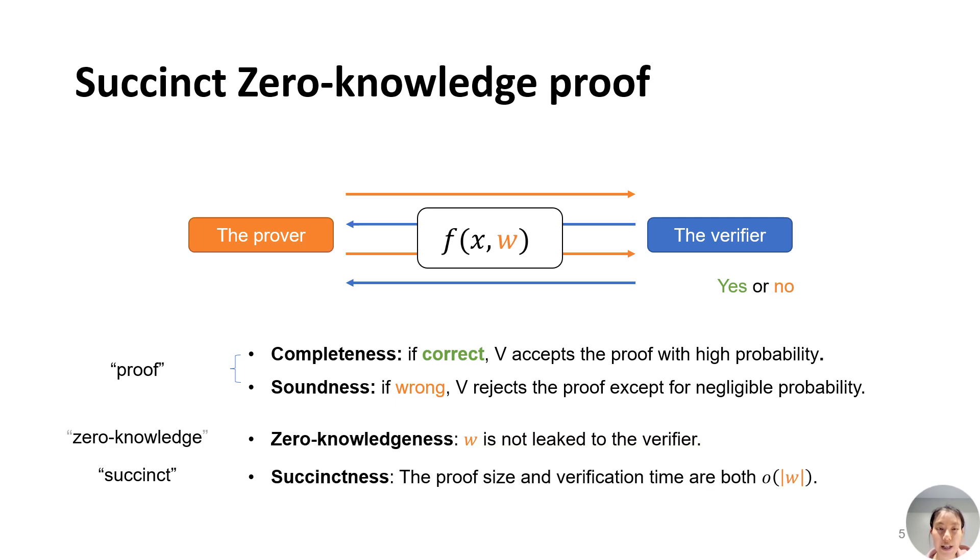Additionally, the protocol can satisfy the zero-knowledge and succinct property. The zero-knowledge property allows the prover to hide the private input used to generate proof. If a protocol is succinct, its verification time and proof size are both sublinear to the size of the input.